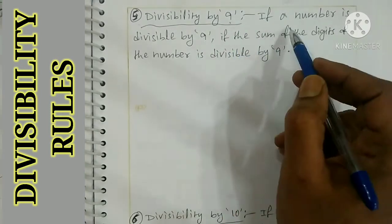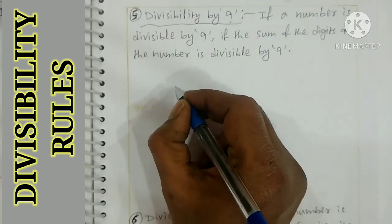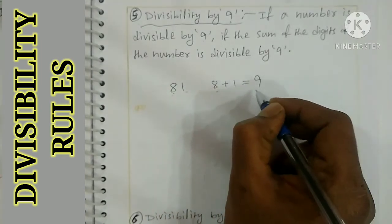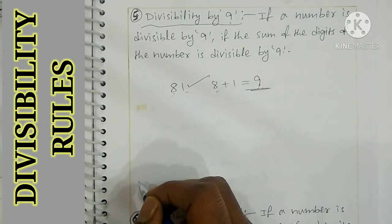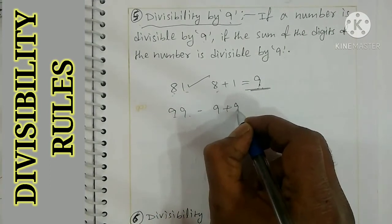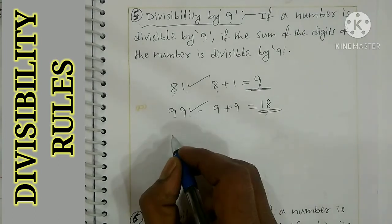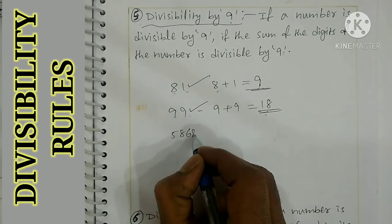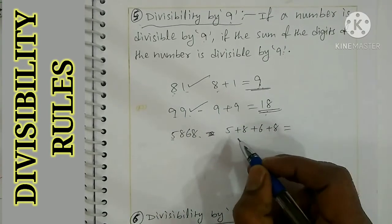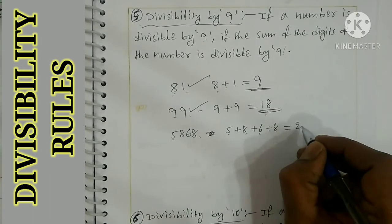Divisible by 9: if the sum of the digits of the number is divisible by 9, then the number is divisible by 9. This is the same model as rule 3. For example, 81: digits 8 plus 1 equals 9, and 9 is divisible by 9, so 81 is divisible by 9. Another example: 99 - digits 9 plus 9 equals 18, and 18 is divisible by 9, so 99 is divisible by 9. Another example: digits sum to 5 plus 8 is 13, plus 6 plus 8 is 27, and 27 is divisible by 9.